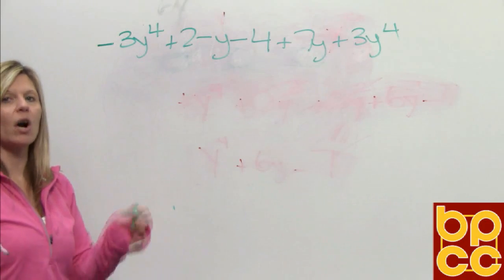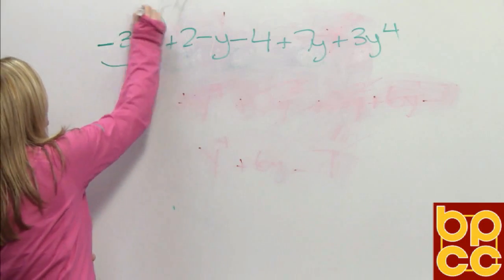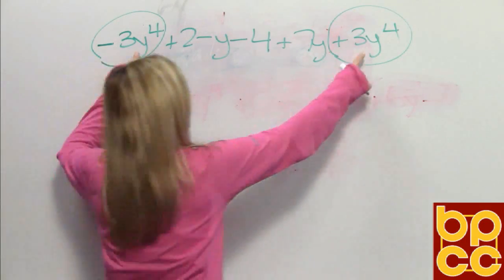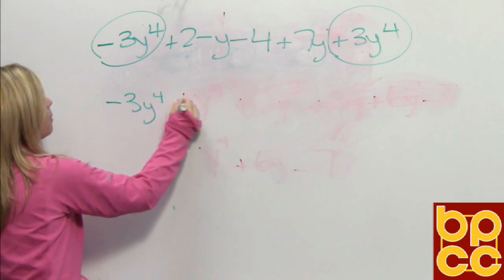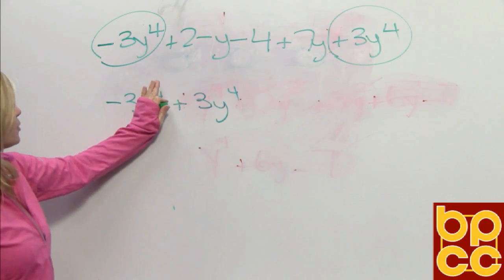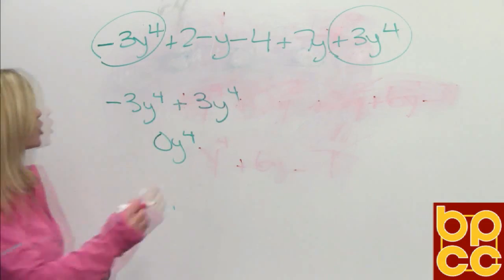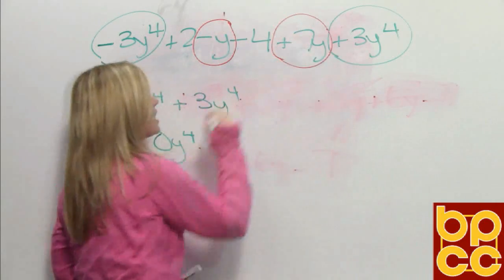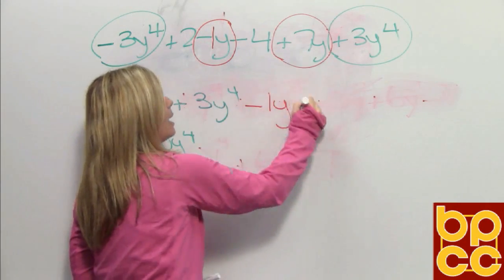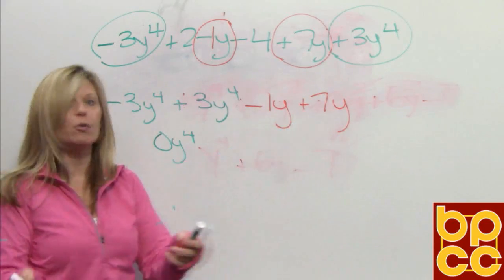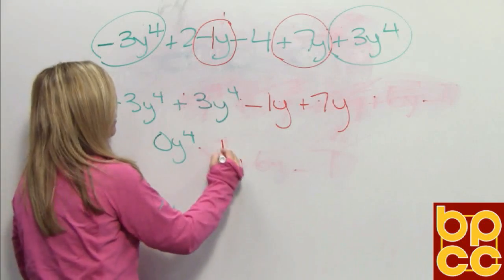We want to put together the terms that are alike. When you talk about like terms in algebra, you're talking about having the identical, same variables. So if you look, negative 3y to the 4th and positive 3y to the 4th are identical — they have the same variables. From arithmetic, we know negative 3 plus positive 3 would make 0y to the 4th. Our next set of like terms would be the negative y and the positive 7y. There is an invisible coefficient in front — it's understood to be 1. So we have negative 1y and positive 7y. Because the signs are opposite, you subtract: 7 take away 1 is 6, and because 7 is the larger number, the answer is positive 6y.